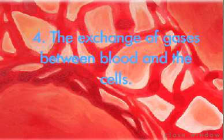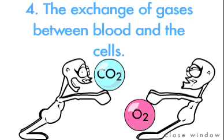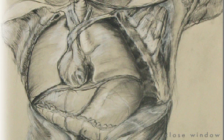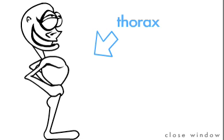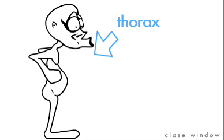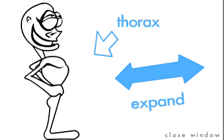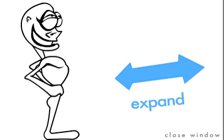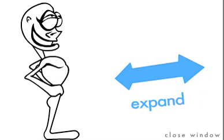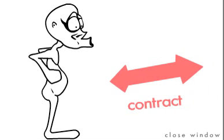Because we do have gas exchange deep inside our body, that means we need a way to get the air deep into our bodies. We do that by expanding our thorax and creating more volume inside than before and pulling atmosphere into our lungs. Then we contract our torso, creating less volume and exhaling air.